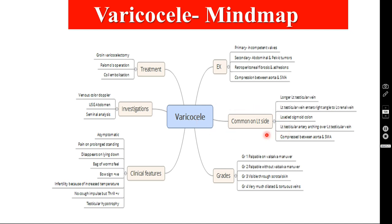Why is varicocele more common on the left side? Because of the longer left testicular vein, the left testicular vein enters the left renal vein at a right angle, a loaded sigmoid colon, the left testicular artery may arch over the left testicular vein, and the left renal vein can be compressed between the aorta and superior mesenteric artery.